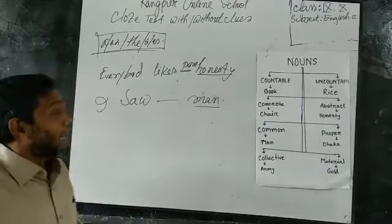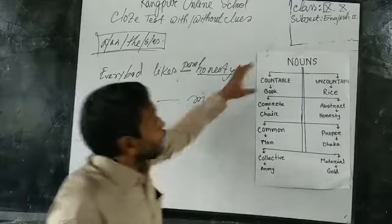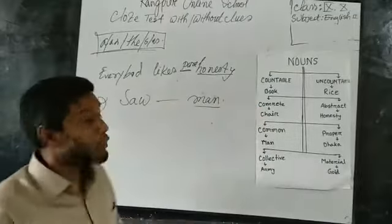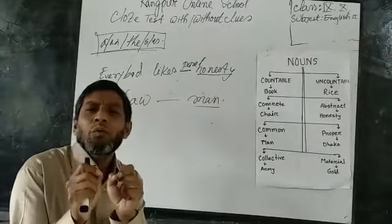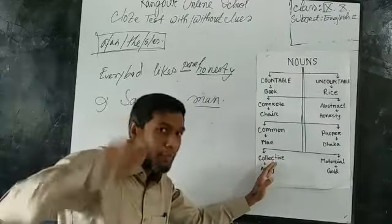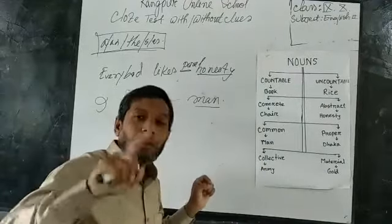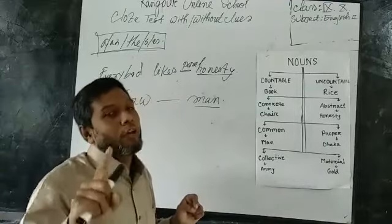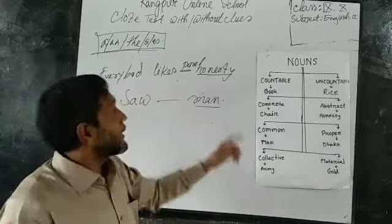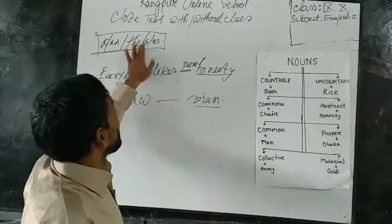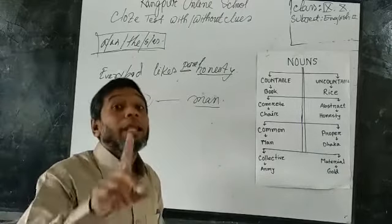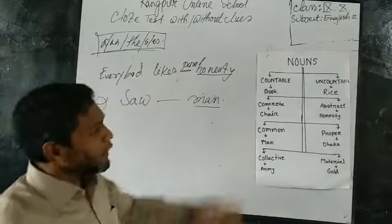So dear students, I am going to share: countable, concrete, common, and collective nouns — you have to remember that when they will be used in a sentence, they cannot be used alone. They must be preceded by 'a', 'an', 'the', 's', or 'es'. But sometimes they may be attributed by some adjective also. On the other hand, we have these four nouns — uncountable, abstract, proper, and material nouns.